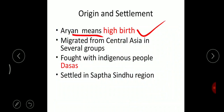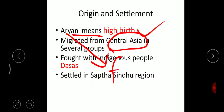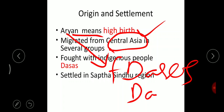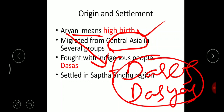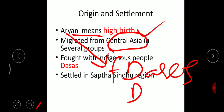Some theories say the Aryans came from Central Asia. There were already indigenous people in India, and these Aryans came and fought with the Dasas or Dasyus — the indigenous people. They defeated and drove away the Dasyus, captured the land, and settled in the Sapta Sindhu region.